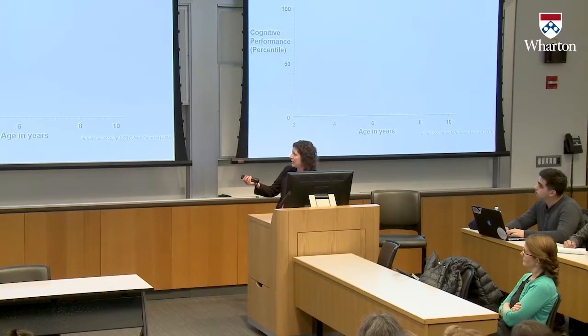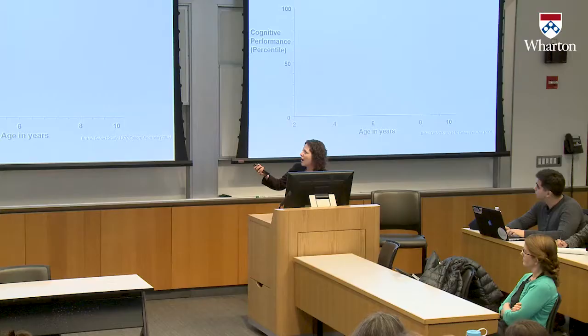The socioeconomic gap in achievement tends to emerge early and then widen throughout the elementary years. The data I'm showing are from the British Cohort Study of 1970, which followed tens of thousands of children in the UK longitudinally from age 2 to age 10. Since a 2-year-old and a 10-year-old can't take the same cognitive tests, I'm showing cognitive performance in percentile — relative rank compared to same-age peers.